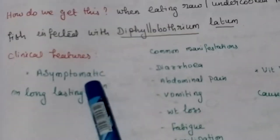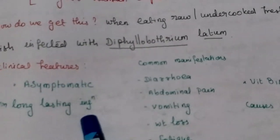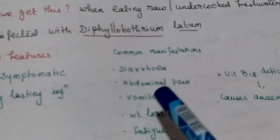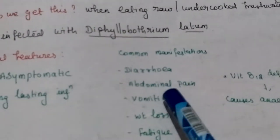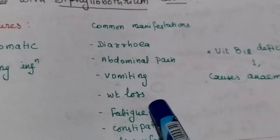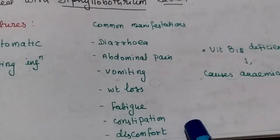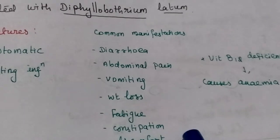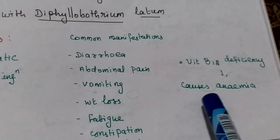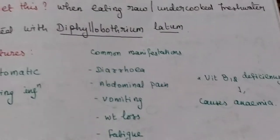Clinical features include asymptomatic or long-lasting infection. Common manifestations include diarrhea, abdominal pain, vomiting, weight loss, fatigue, constipation, and discomfort. It mainly causes anemia and vitamin B12 deficiency.